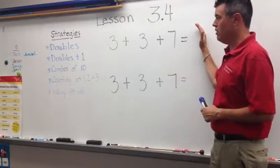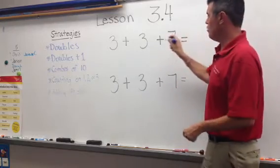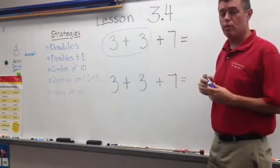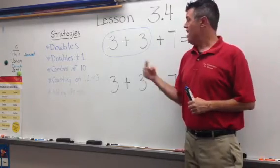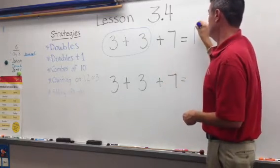So for example, in this first one, we have 3 plus 3 plus 7, and I see a double. I see 3 plus 3, and I know, because I know my doubles, that 3 plus 3 is 6. And then I can do 6 plus 7. That's a doubles plus 1. I know that my answer is 13.